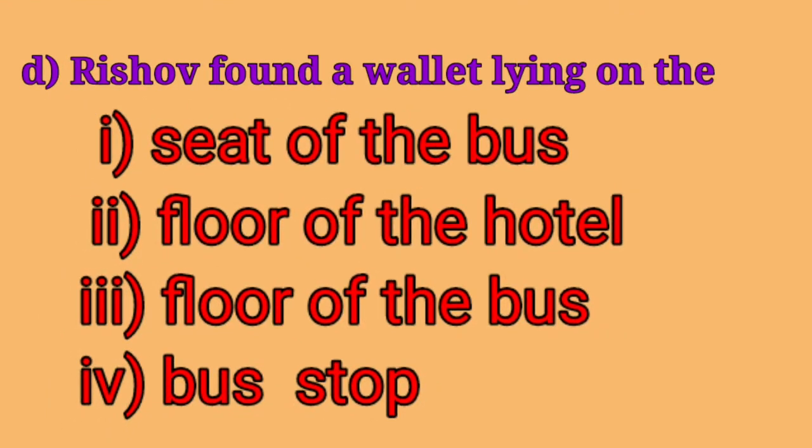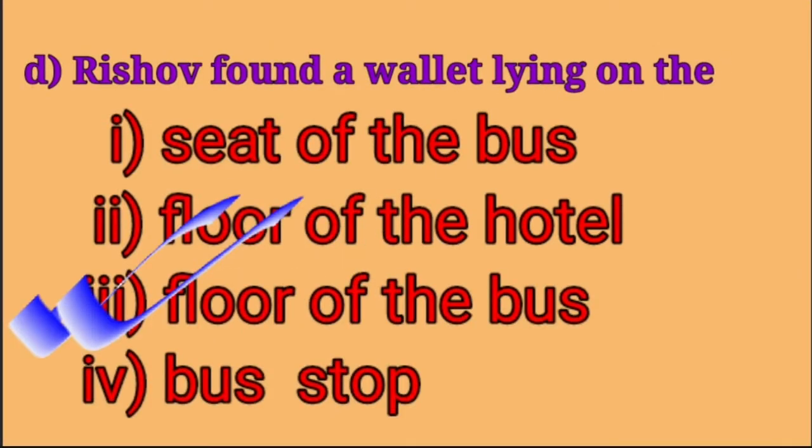Number D: Rishabh found a wallet lying on the — number one: seat of the bus, number two: floor of the hotel, number three: floor of the bus, number four: bus stop. The correct option is number three: floor of the bus.